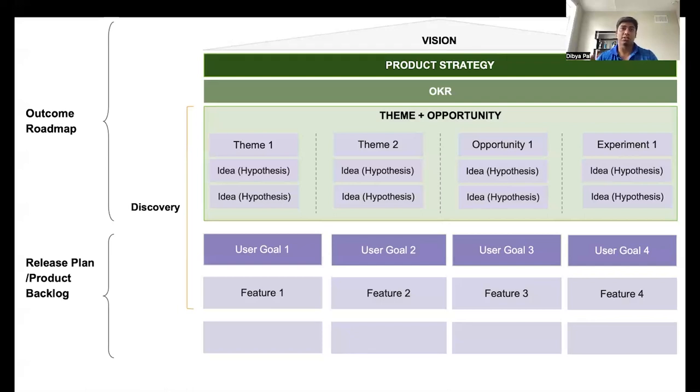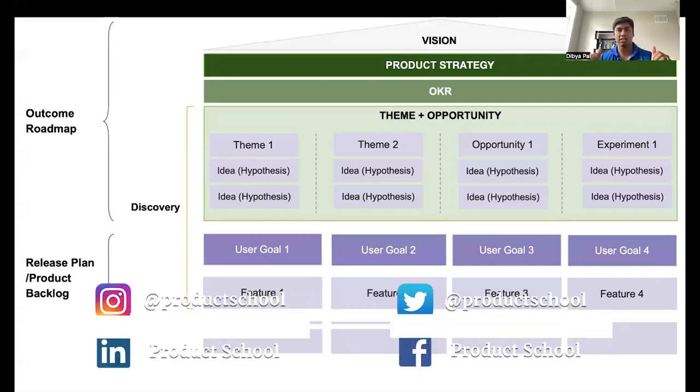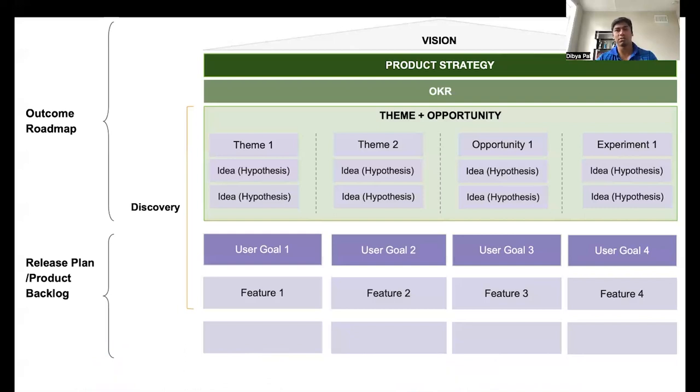By this time, you would have noticed that we don't have features, stories, or solutions in the outcome roadmap. That would be a release plan. A release plan is a list of features and needs. A roadmap, on the other hand, is a document intended to communicate the strategic direction of the company. So what are our goals? What are our outcomes? And how will we win in the market? It's easy to come up with solutions or features, but how do you ensure that it will solve the customer's problem or help you achieve your outcome?